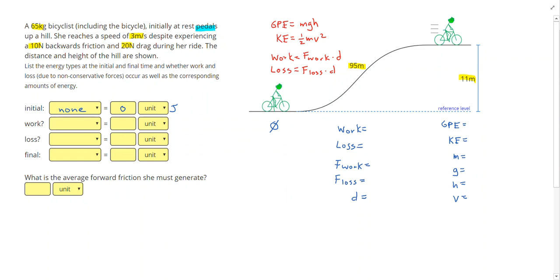Let's go ahead and fill out some givens. So 65 kilograms is going to be her mass. Three meters per second is her speed at the top of the hill, speed similar to velocity. So let me write that down as her velocity of three meters per second. The backwards friction and the drag are going to combine to be the forces that are causing loss. So 10 plus 20 gives me a force that's causing loss is 30 newtons. The distance of the hill, so the work and the loss, the backwards friction and the drag are occurring for this 95 meter distance. And this 11 meters refers to the height of the hill, which is in the GPE equation. So right here, I can put the height of 11 meters.